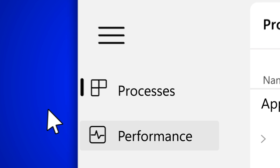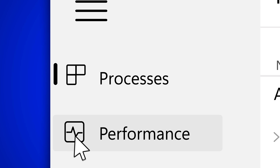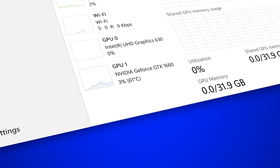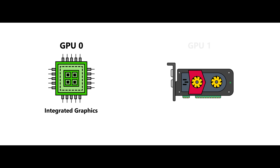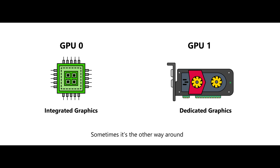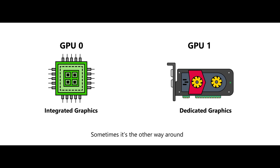Right-click the Start button, select Task Manager, then go to the Performance tab — there you can see which graphics card you have. GPU zero is usually your integrated graphics and GPU one is usually your dedicated graphics. This is usually the case, not always. If your PC does not have integrated graphics, then GPU zero will be the dedicated graphics.